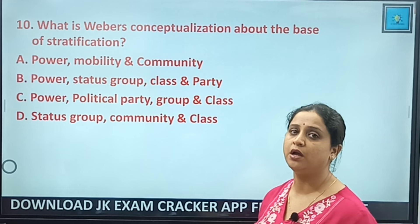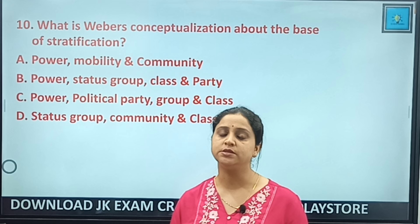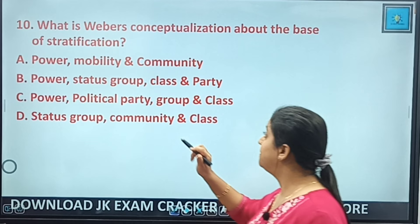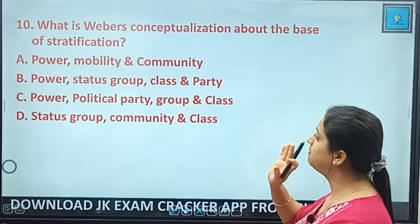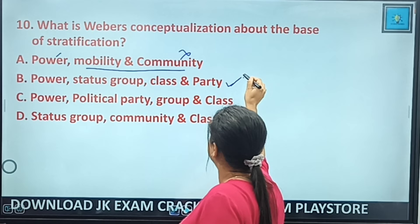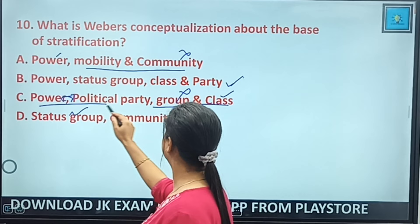MCQ 10: Weber's conceptualization of the base of stratification — Weber gives three bases: class, status group, and party. The correct option is: power, status group, class, and party. Answer: B — power, status group, class, and party. MCQ 11: Three dimensions of social stratification by Weber — power/property relates to class; prestige relates to status; party is the third. Answer: C — power, prestige, and property.